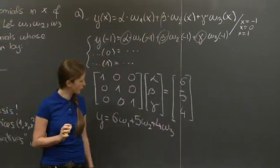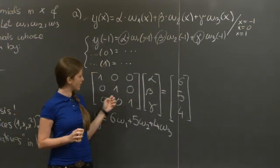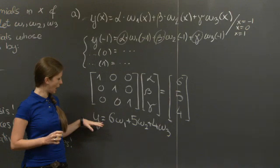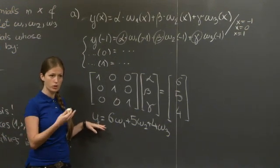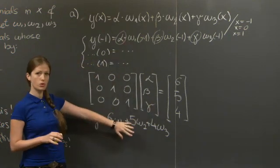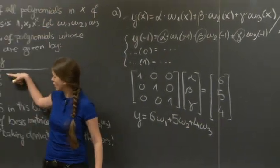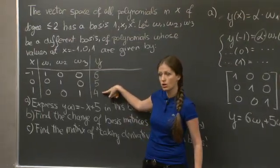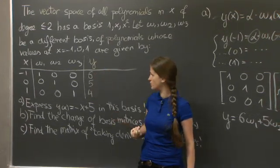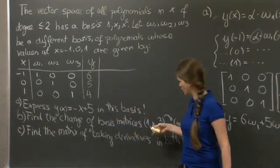And let's notice another thing. No matter what values we put here, this matrix is always going to stay the same. It's only the right-hand side that's going to change. So if we're given any other polynomial now to express in a basis w1, w2, and w3, we don't have to do any thinking, we don't have to do any computations. What we do is go back to our table at the beginning and just read off, let's go back to the table, and just read off these values. So in this case, y is 6 times w1, 5 times w2, and 3 times w3.